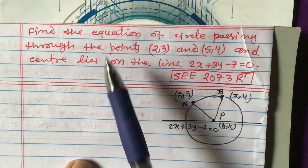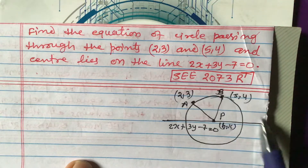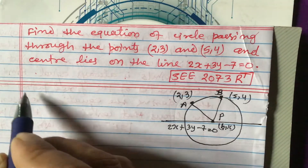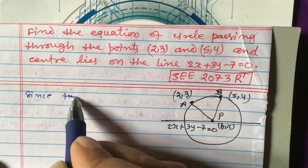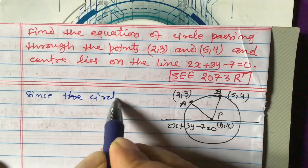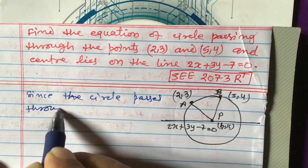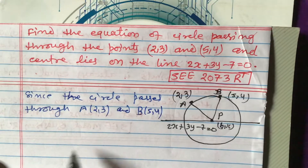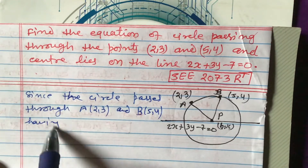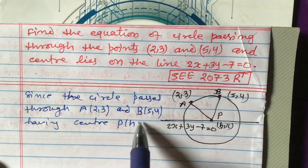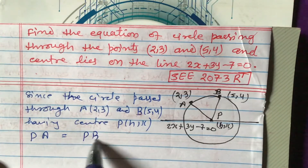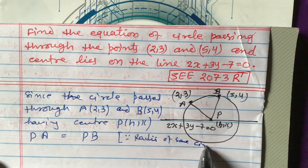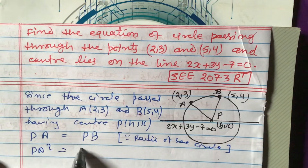According to the question, the circle passes through A(2,3) and B(5,4), having center P(h, k). Since PA and PB are both radii of the same circle, we can write PA = PB, and squaring both sides, PA² = PB².